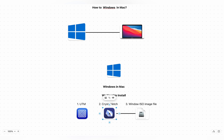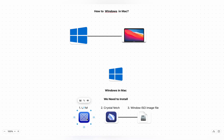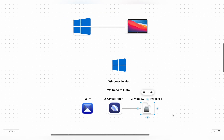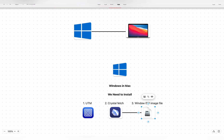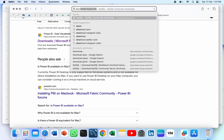We can download Windows on Mac by following similar steps. First we have to download UTM, which will be found for your MacBook. Then we have to download CrystalFetch. Then we have to download the ISO file and import it. So let's move to the next step — first we need to install UTM.